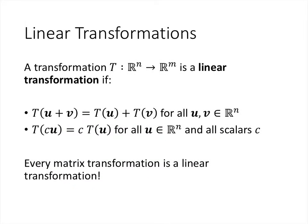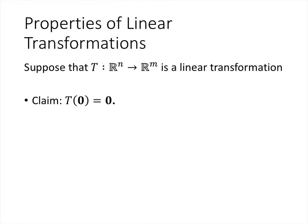Our definition of a linear transformation is: any transformation that has these two properties is called a linear transformation. That means every matrix transformation is a linear transformation. Linear transformations have some other nice properties as well. One is that when we plug in the zero vector, we get the zero vector.